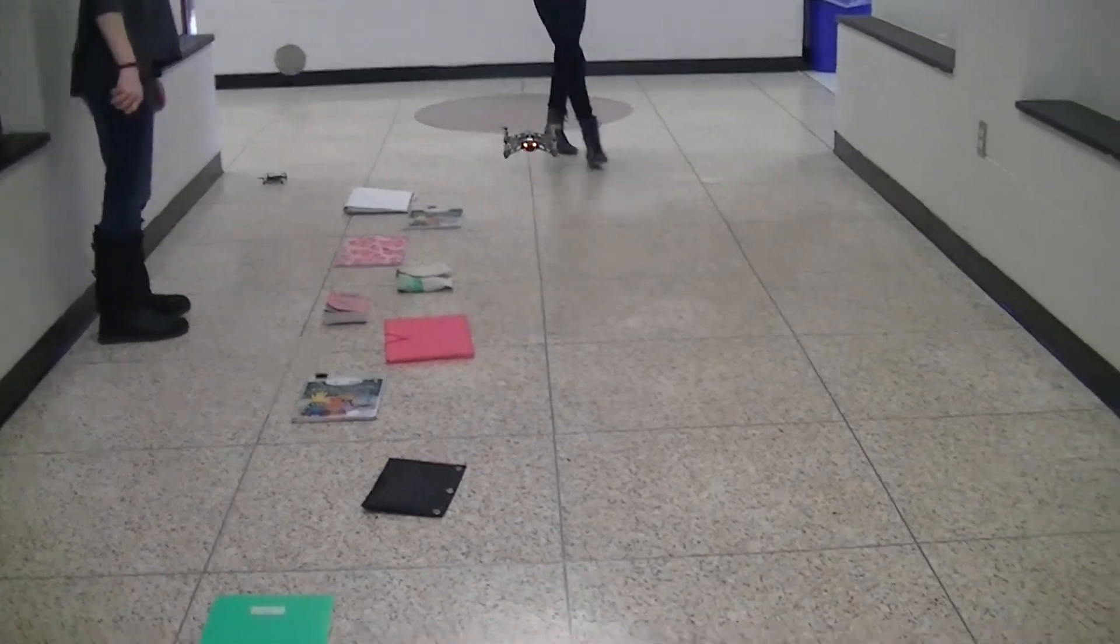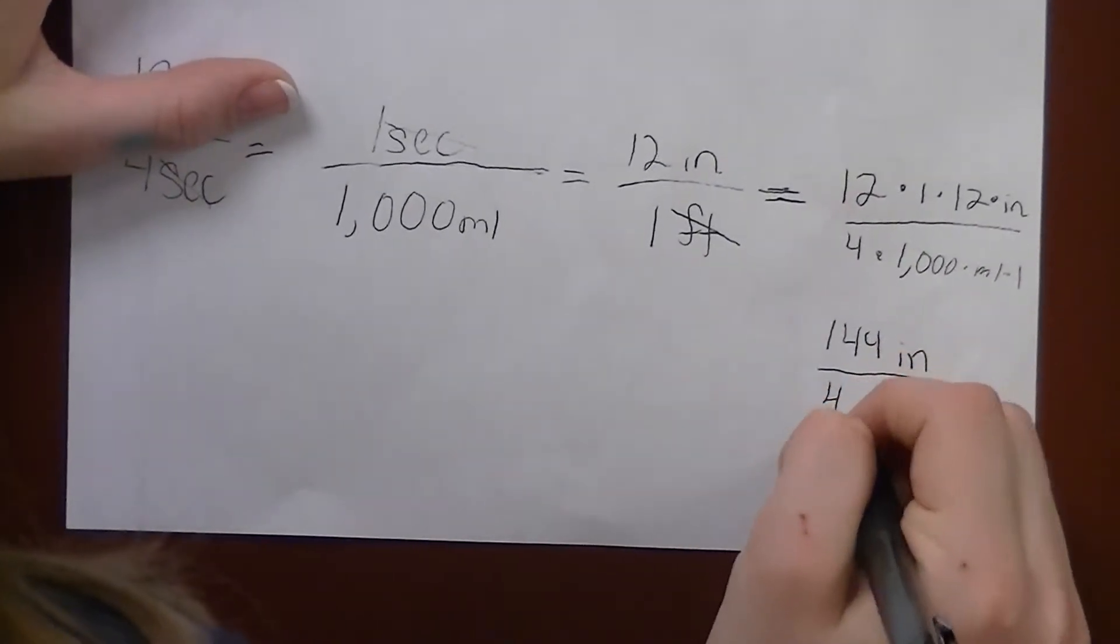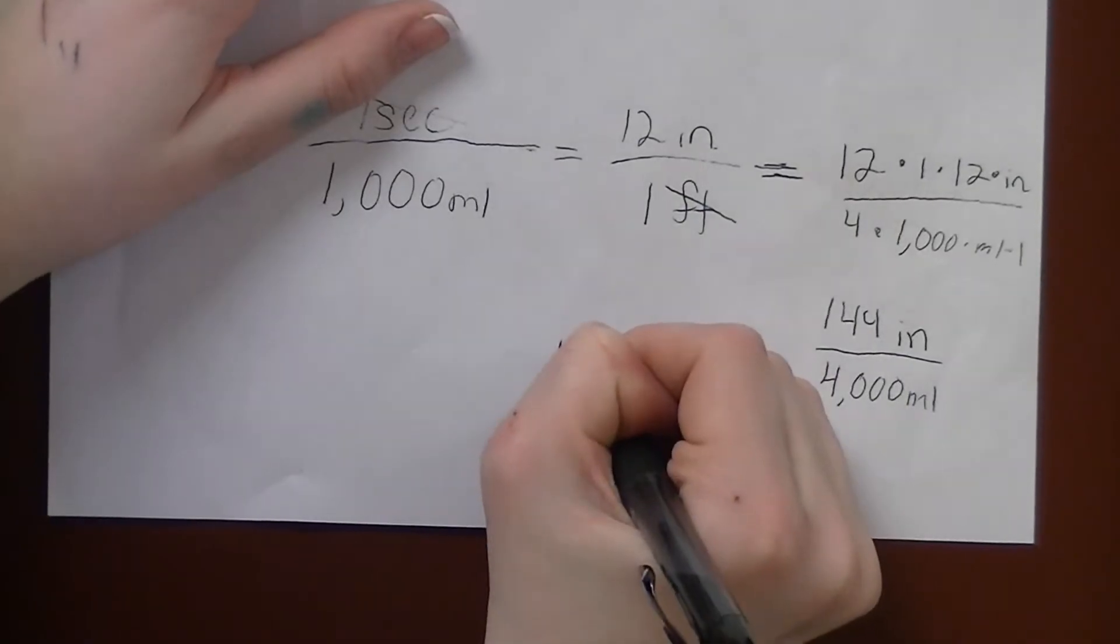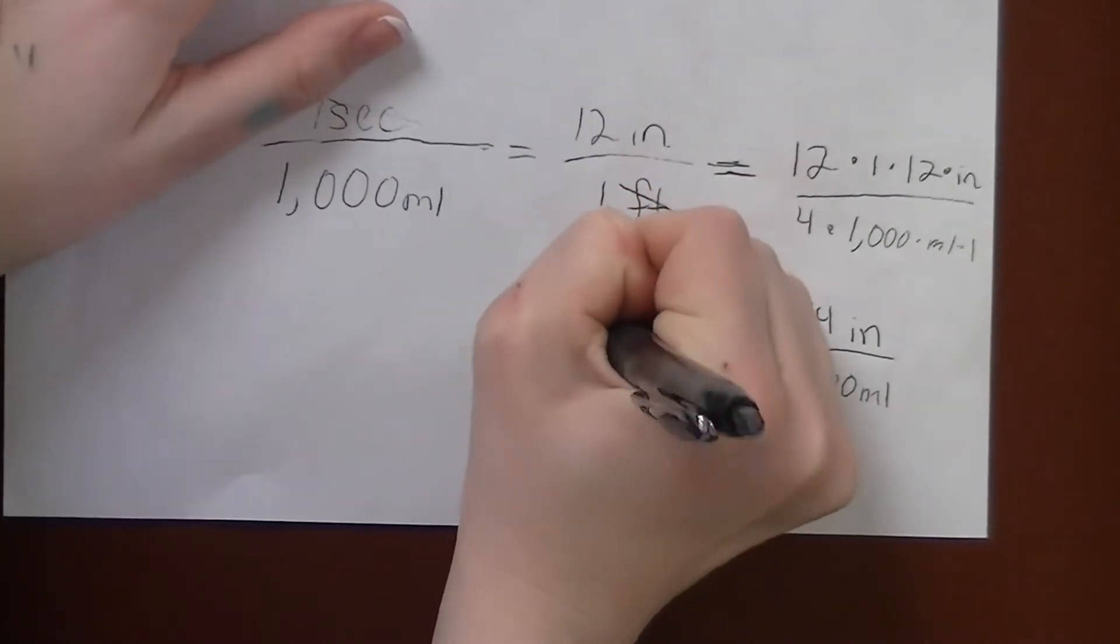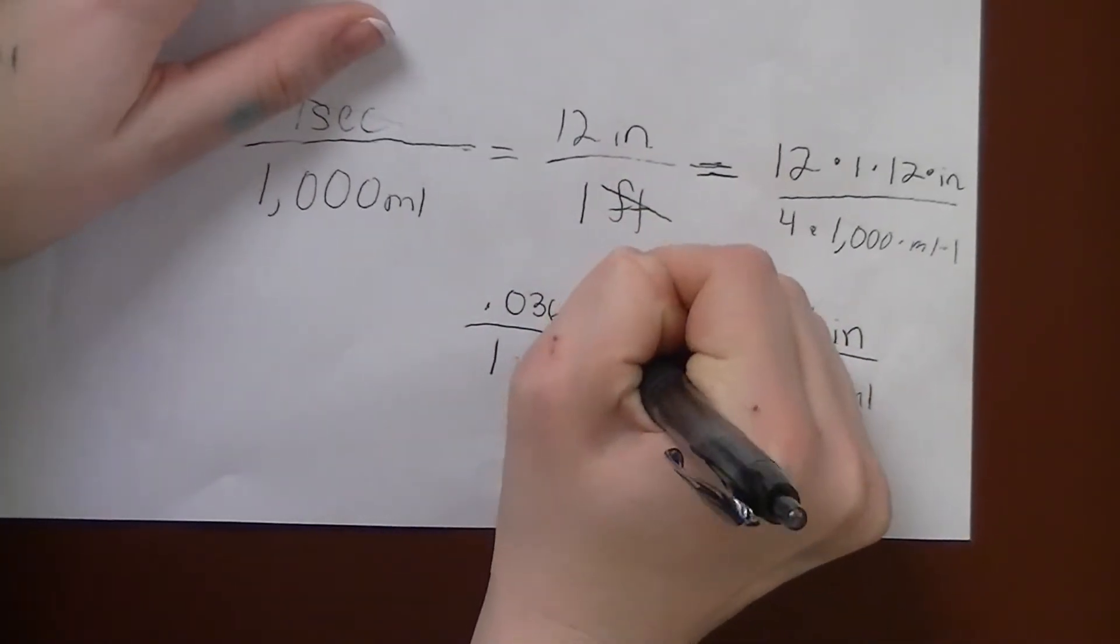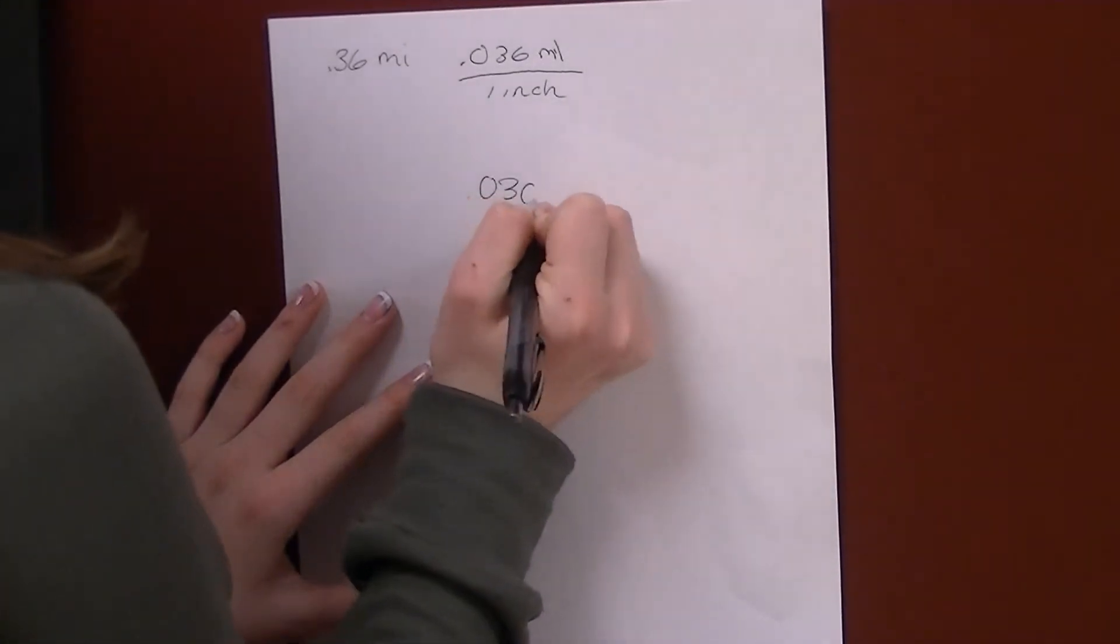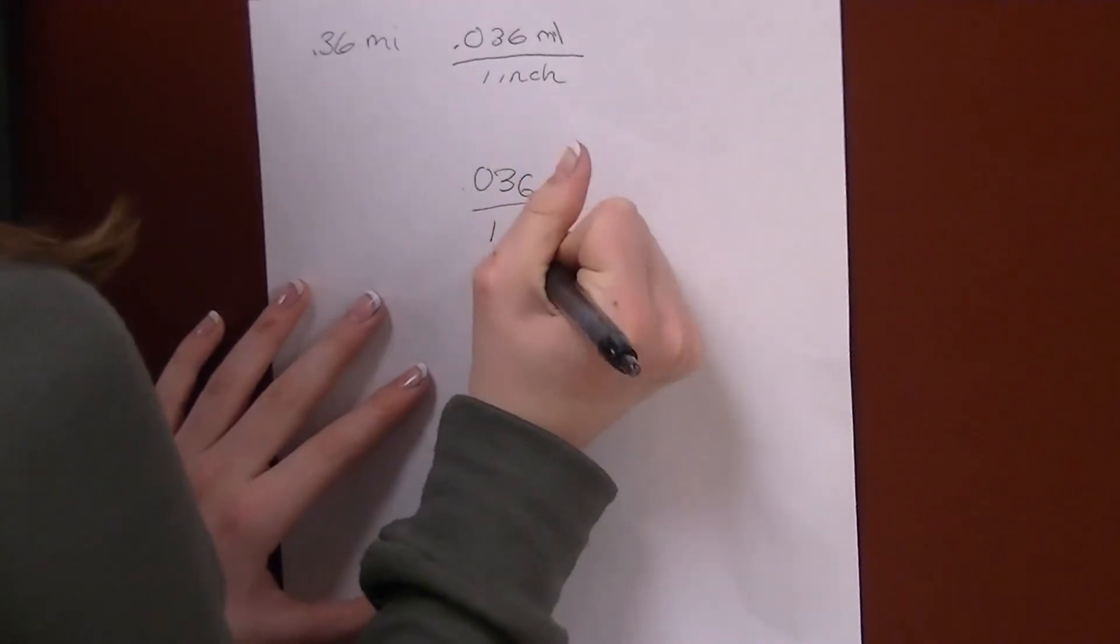Our course was 12 feet long and it took our drone 4 seconds to go across. We had to figure out how many milliseconds were in one second, how many inches were in one foot, and we figured out that there was 144 inches in 4000 milliseconds. Then we simplified that to .036 milliseconds in one inch.